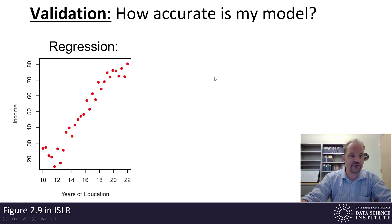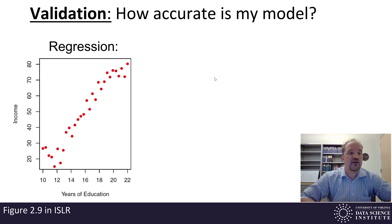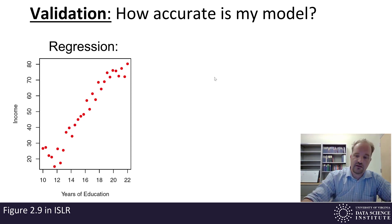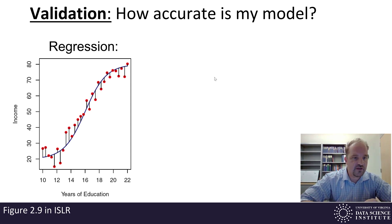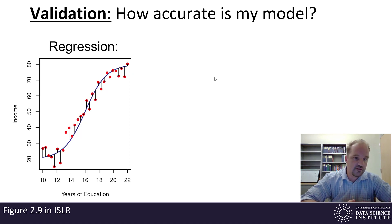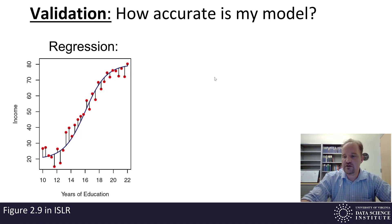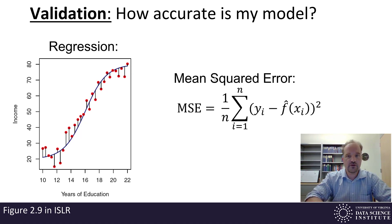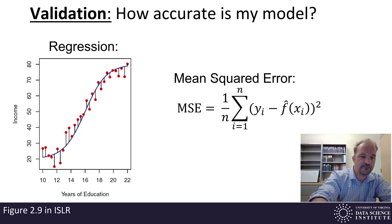Here in our plot on the left-hand side of our screen we have a regression model, and we're trying to predict income as a function of years of education. I can put in a model which I'm representing with this blue curve that's approximating the function for income as a function of years of education. And so I want to know how accurate is this model.